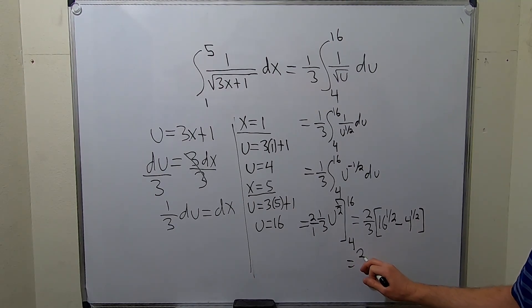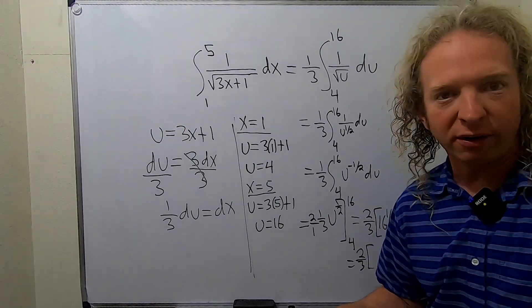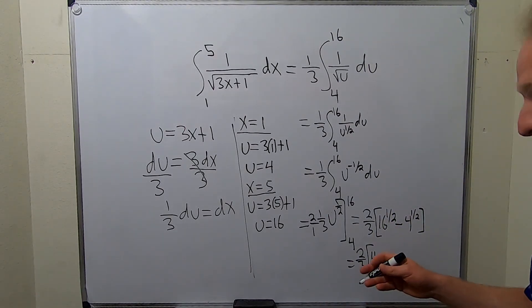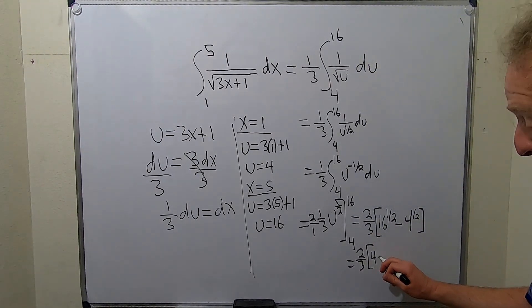So this is 2 thirds. It's working out quite nicely. 16 to the 1 half is the square root of 16. That's going to be 4. And 4 to the 1 half is the square root of 4 which is 2.